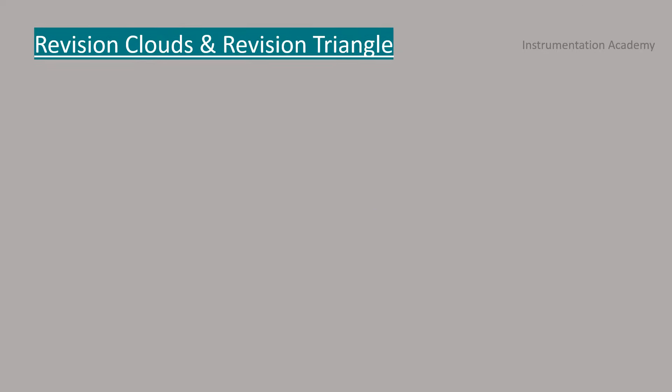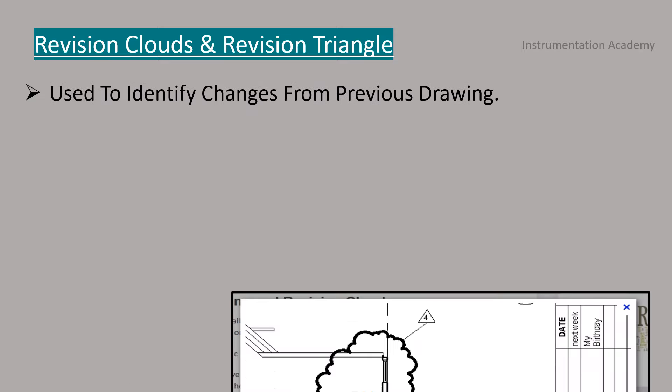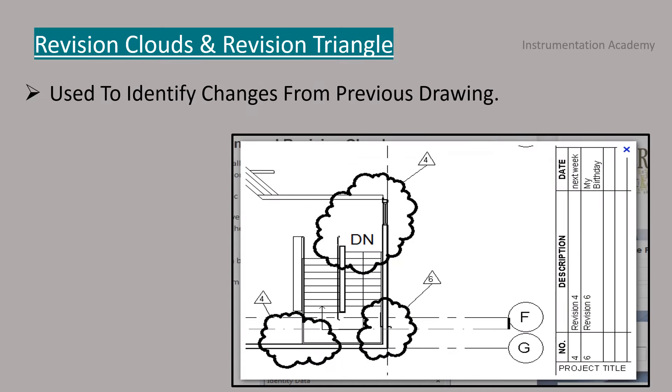P&ID Revision clouds and revision triangles. There are two common methods of indicating revision changes made in a drawing. The first is cloud method where each change made in a drawing is enclosed by a hand-drawn cloud shape. The second method involves placing a triangle with the revision number inside it next to the portion where revision changes are made.